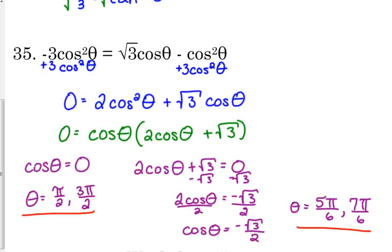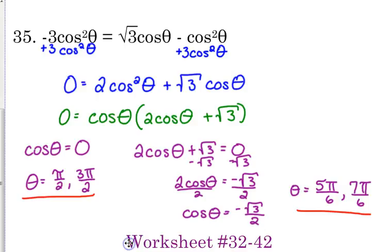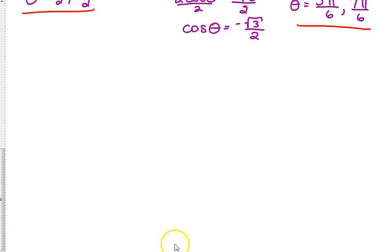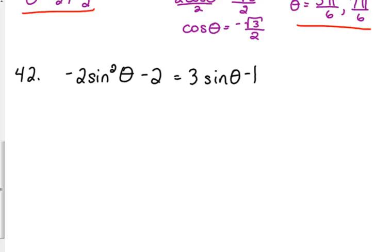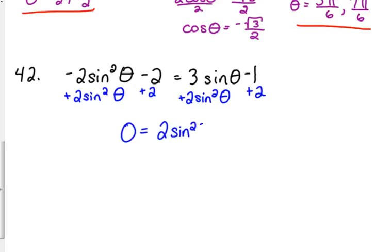Let's look at number 42. One more type of factoring you need to be aware of. Number 42 looks like this: negative two sine squared of theta minus two equals three sine of theta minus one. Same deal — we've got sines on both sides, so we need everything on one side. I'm going to add the two sine squared, because that makes my quadratic term not negative, and also add the two. So zero equals positive two sine squared of theta plus three sine of theta plus one.